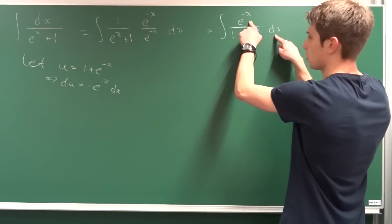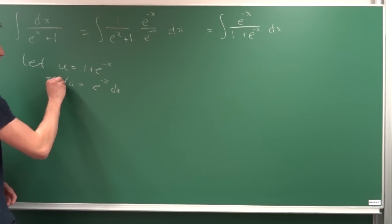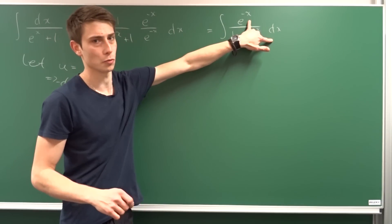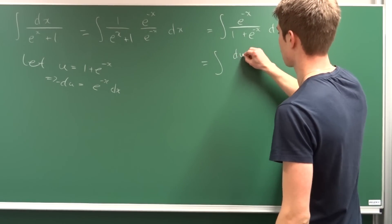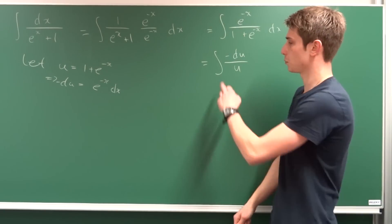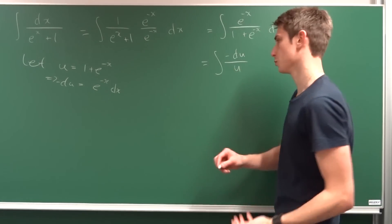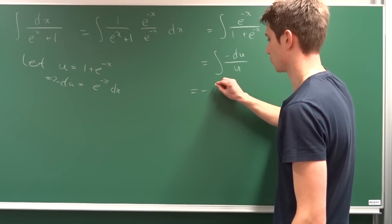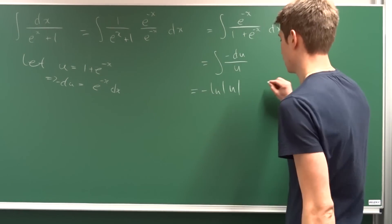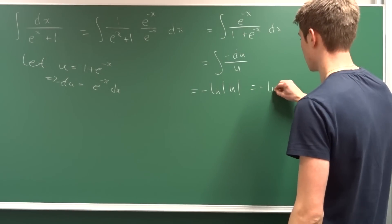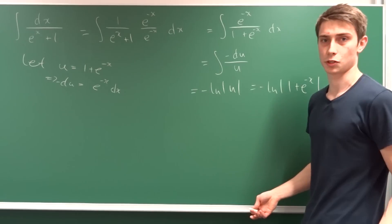The numerator e to the minus x dx is exactly du with a minus sign, so minus du equals that term. Plugging in, the integral becomes the integral of minus du over u. Bringing the minus in front, this is just minus the natural log of u. Substituting back, we get minus ln of 1 plus e to the minus x plus an arbitrary constant C. That was the first answer.